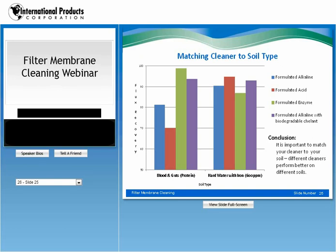Suppose we change the soil. The first three columns show the soil changed to a standard soil nicknamed 'blood and guts' — essentially a mixture of sheep's blood and biological proteins mixed together, which makes a significant fouling agent for a membrane. After the membrane is fouled, look how effective an enzyme cleaner is for that specific soil. To the right, another set of bar charts compares when only hard water is used as the fouling agent — 600 ppm iron as well as calcium and magnesium. If this was the only soil present, you would conclude that the acid cleaner is the optimal choice. So it's imperative that you match your cleaner to your soil.